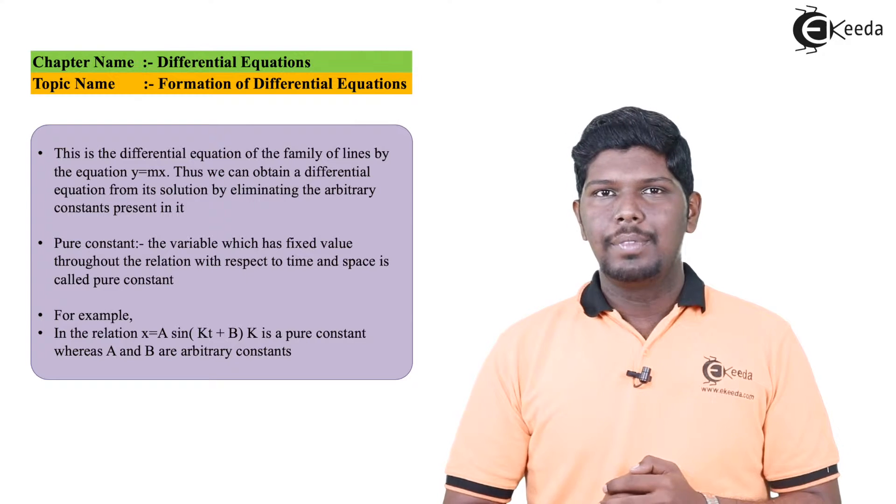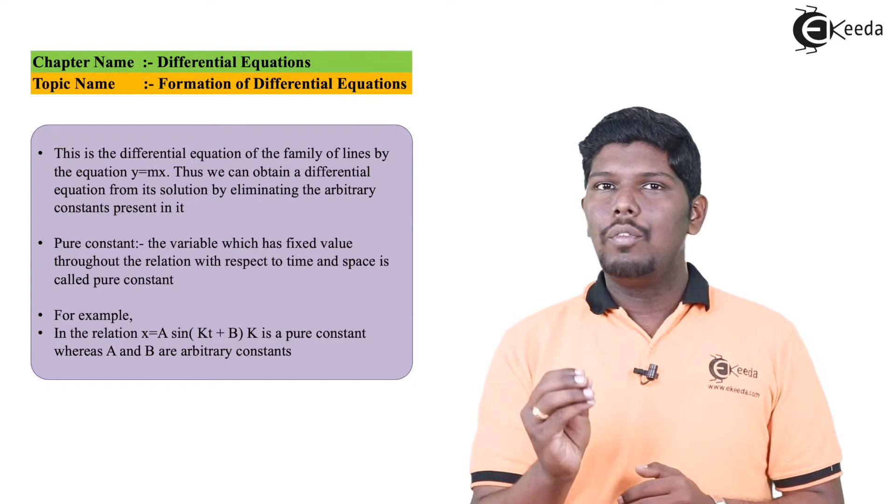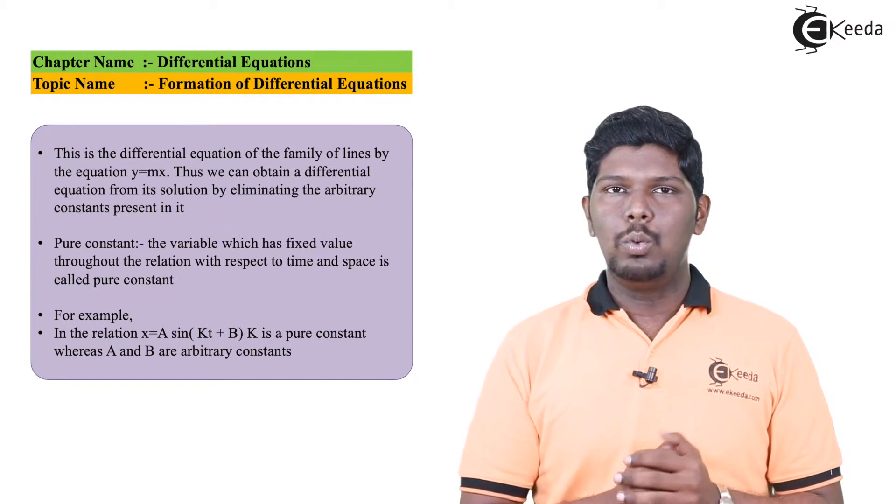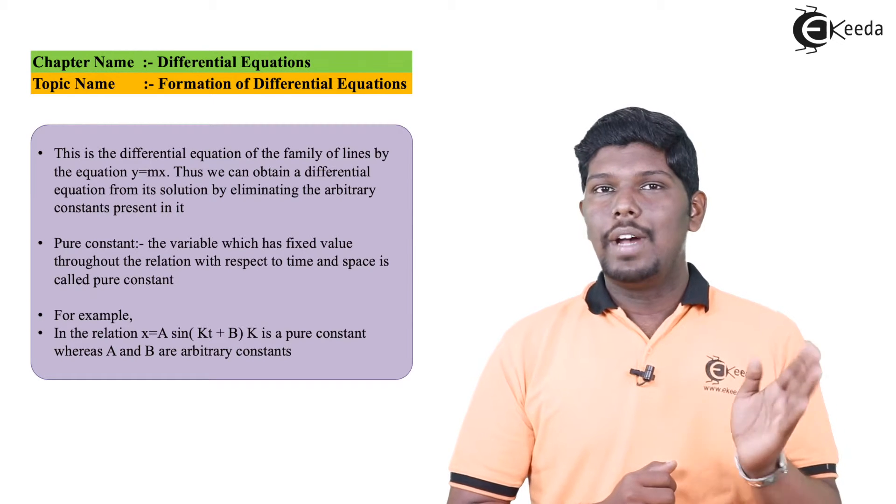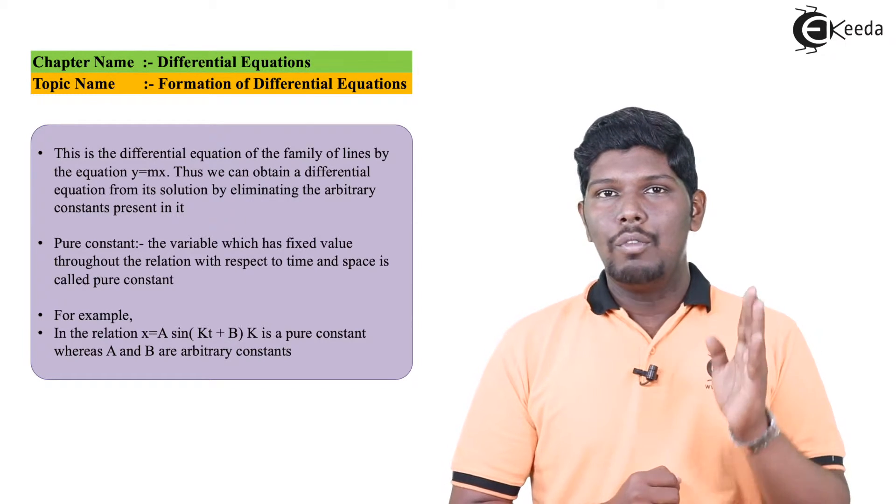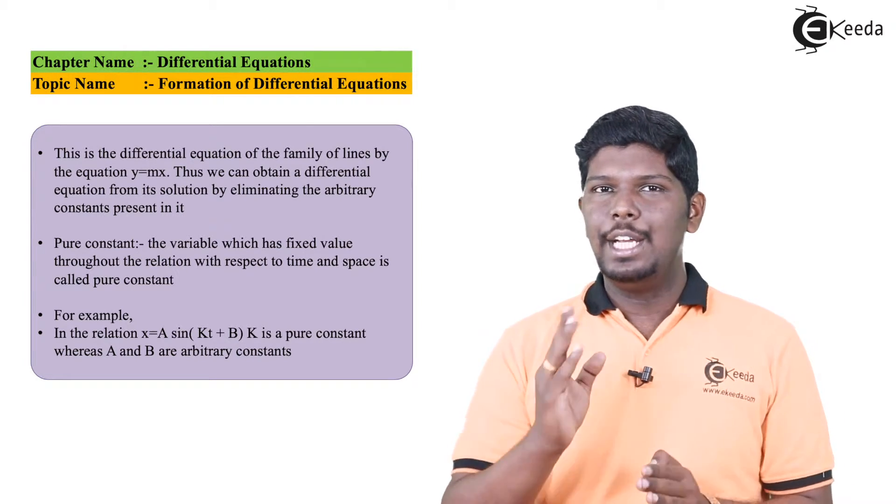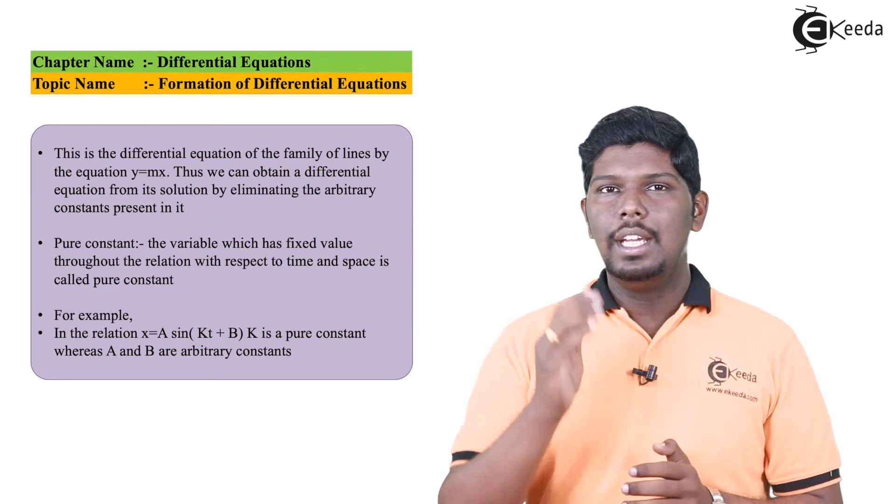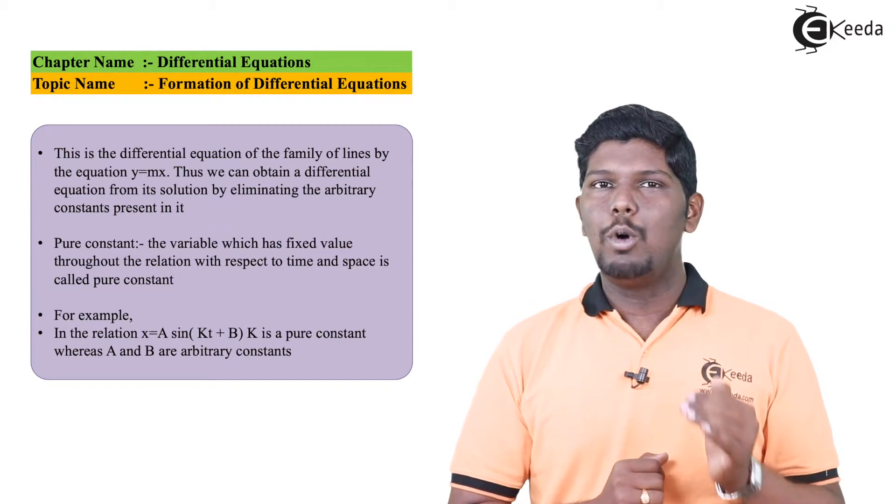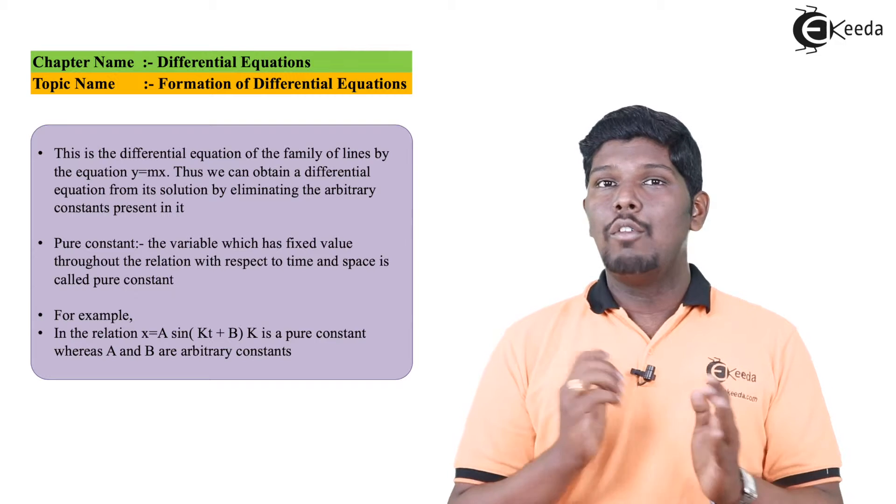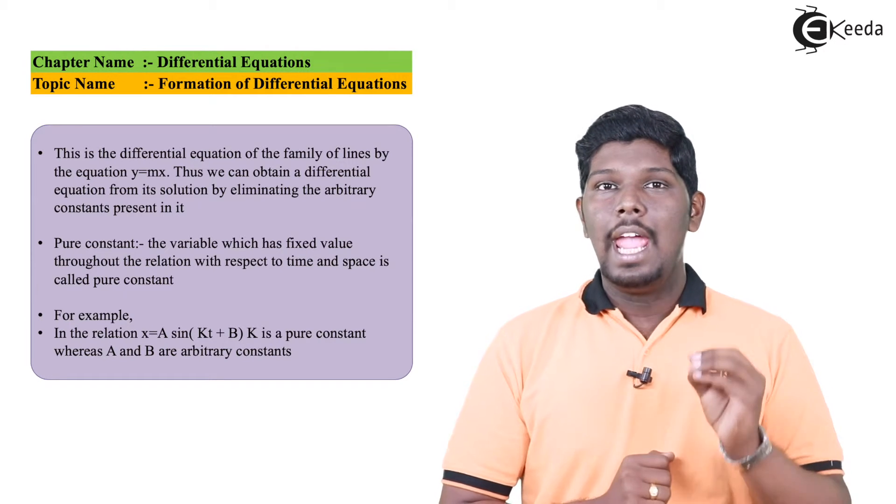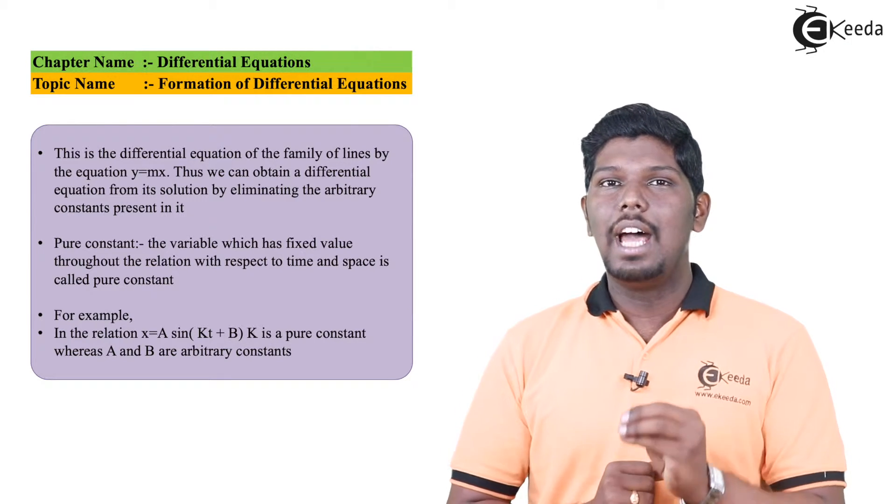So the value of the first derivative is equal to m. Now let us substitute the value of m as dy/dx in the original equation. So the original equation was y equals mx. That will give you y equals dy/dx times x, or simply you can say dy/dx equals y/x. As you can see, we have already obtained a differential equation and at the same time we have eliminated the arbitrary constant.